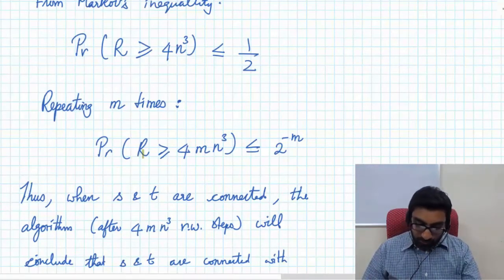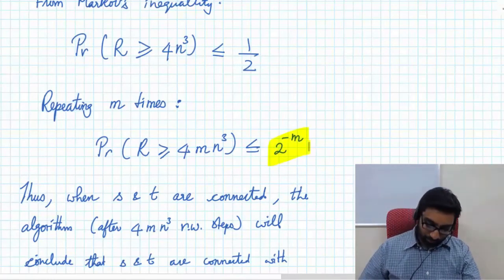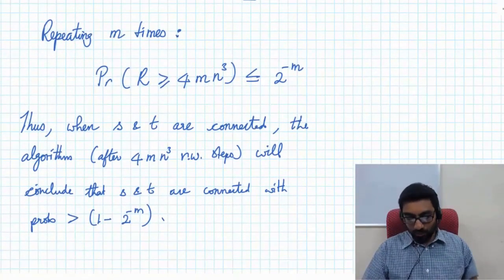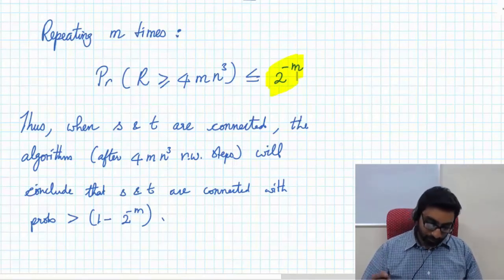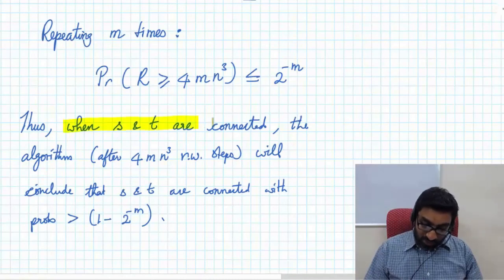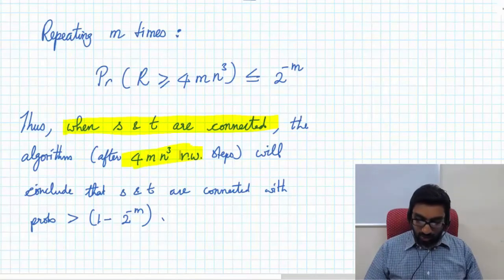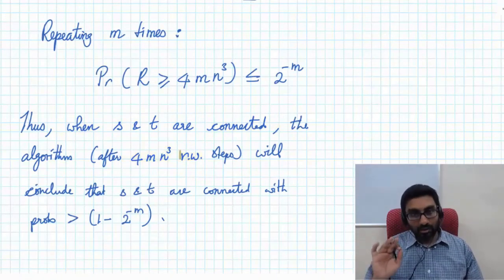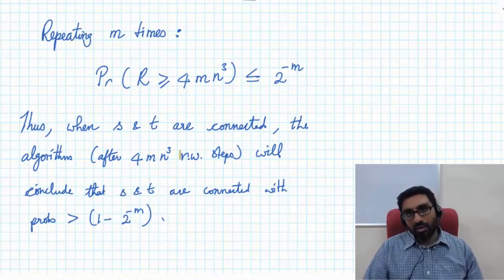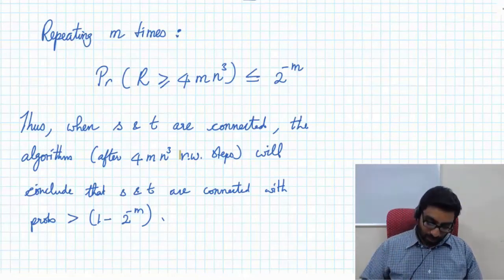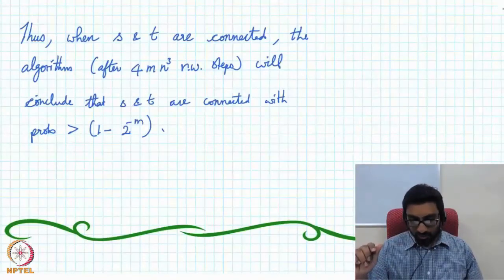If we run the random walk for 4mn³ steps, the probability that R exceeds 4mn³ is at most 2^(−m). Setting m = log n makes this at most 1/n. So when s and t are connected, after 4mn³ steps the algorithm concludes they are connected with high probability. If t is not reached after 4mn³ steps, we conclude s and t are not connected, and the probability of being wrong is at most 2^(−m). This brings us to the end of the segment.